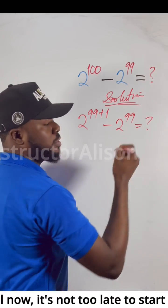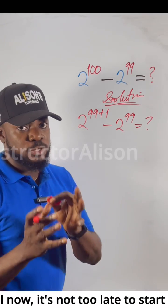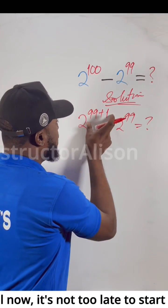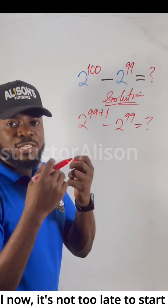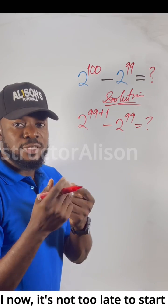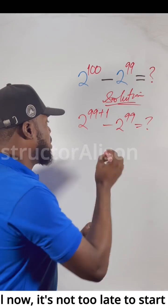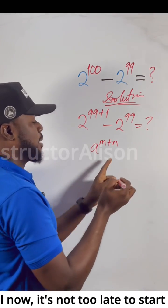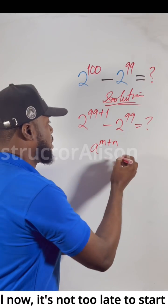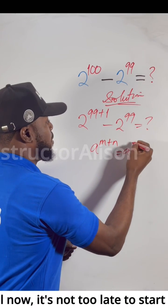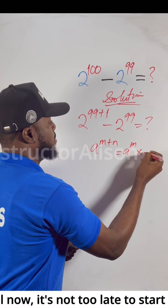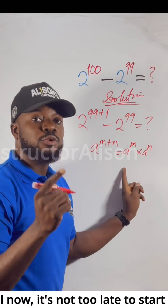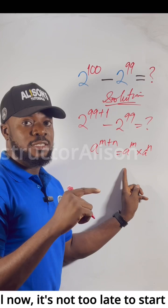What will be the solution to this pattern? I want to reduce this to the lowest point. Here, we can transform it using the law of indices. Keep in mind, we have a to the power of m plus n, and we can write this as a to the power of m times a to the power of n. That is the product law of indices.